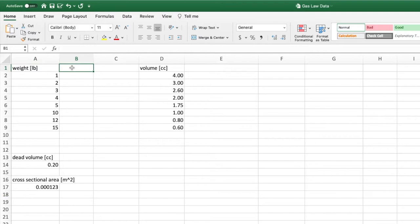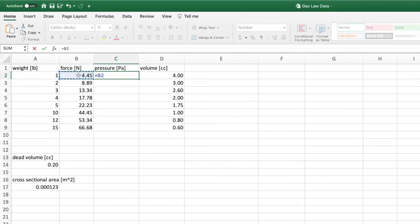Now we need to convert the weights into pressures, so first we convert to SI units. For weight, also known as force, SI units is newtons. Then, to find pressure, just divide force by cross-sectional area. This will give you pressure in SI units, which is pascals.